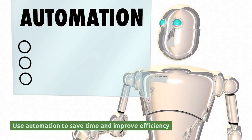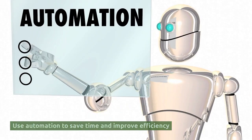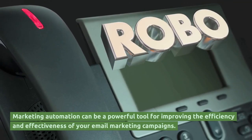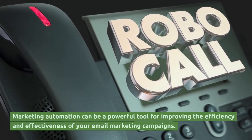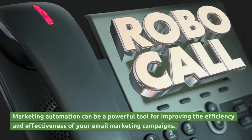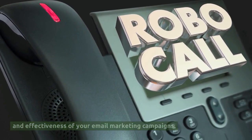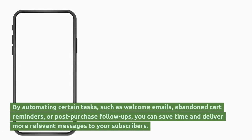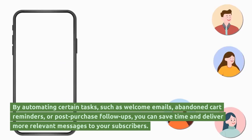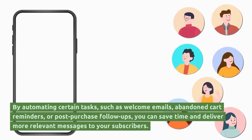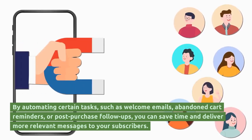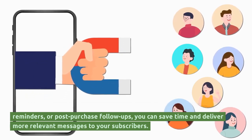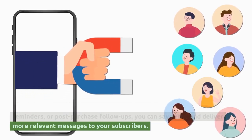Use automation to save time and improve efficiency. Marketing automation can be a powerful tool for improving the efficiency and effectiveness of your email marketing campaigns. By automating certain tasks, such as welcome emails, abandon cart reminders, or post-purchase follow-ups, you can save time and deliver more relevant messages to your subscribers.